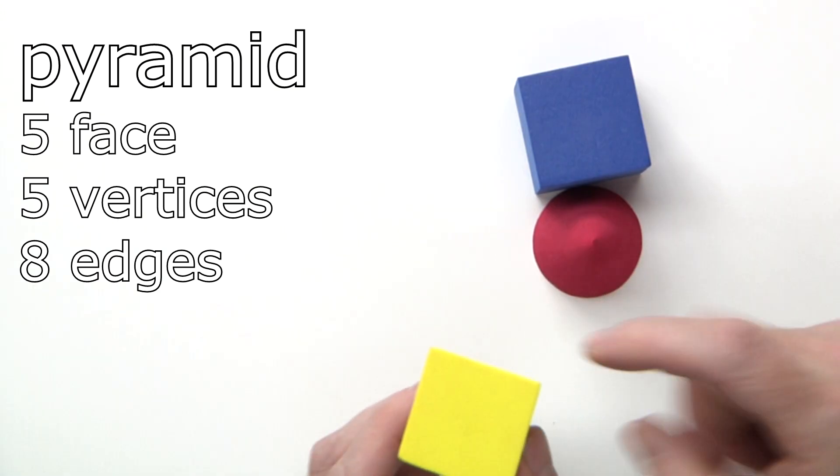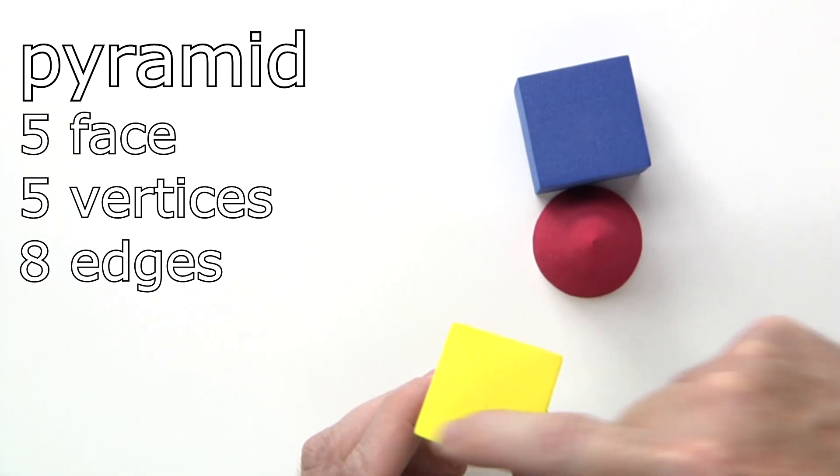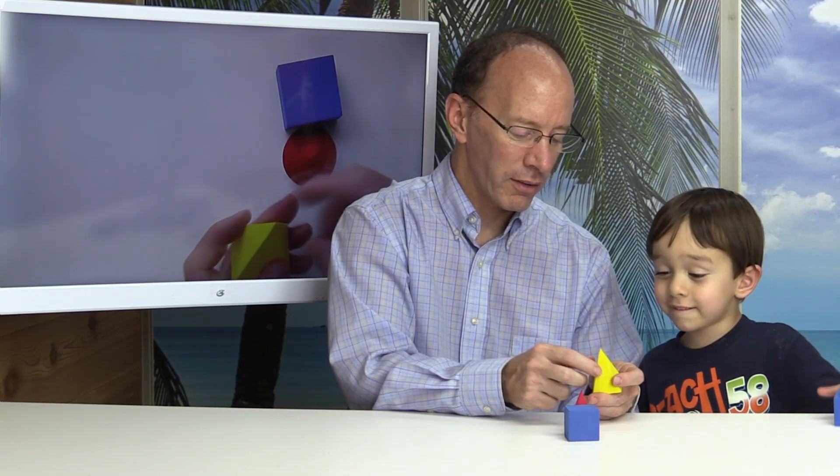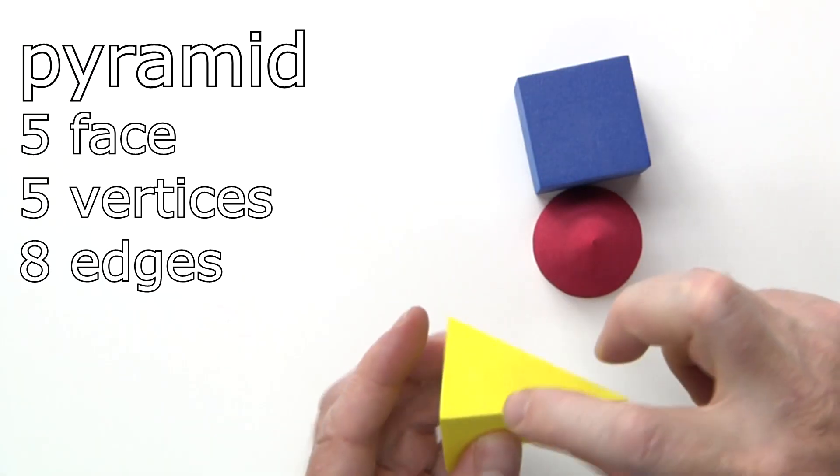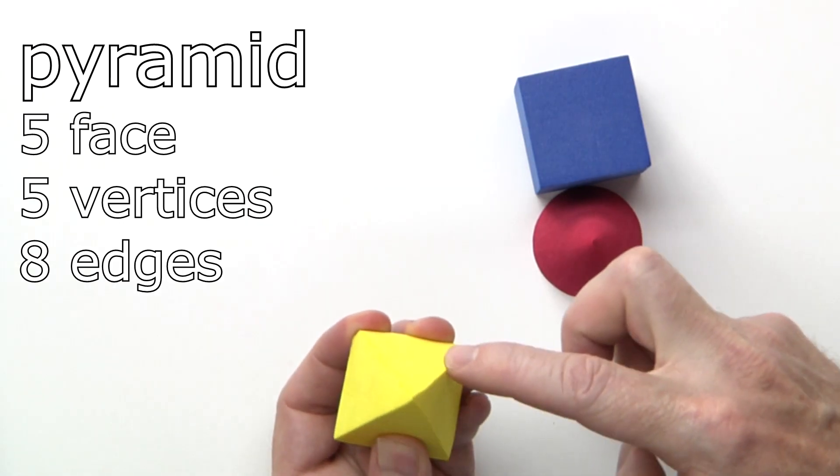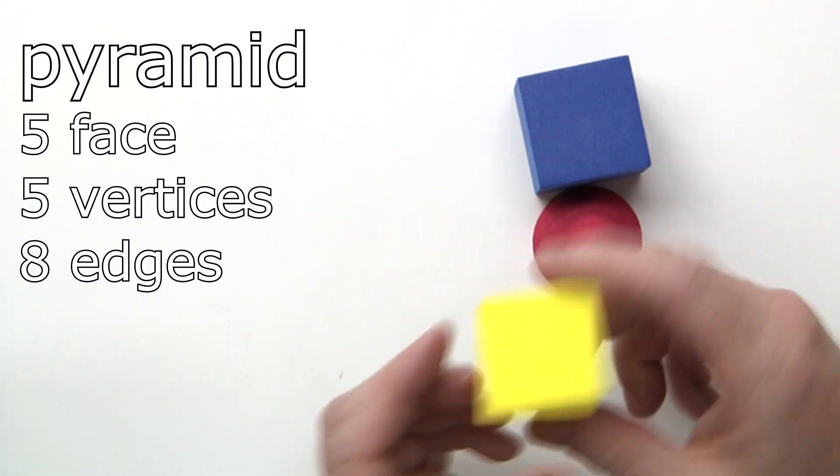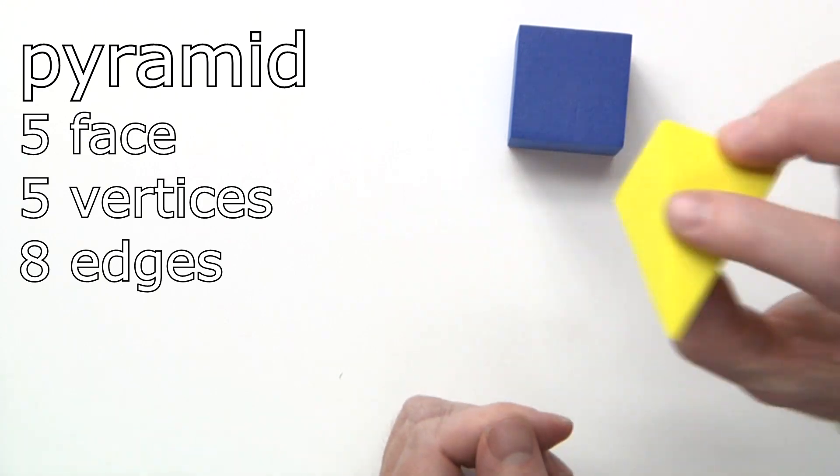Let's count the vertices. 1, 2, 3, 4, 5. Five vertices. Let's count the edges. 1, 2, 3, 4, 5, 6, 7, 8. Eight. A pyramid has 8 edges.